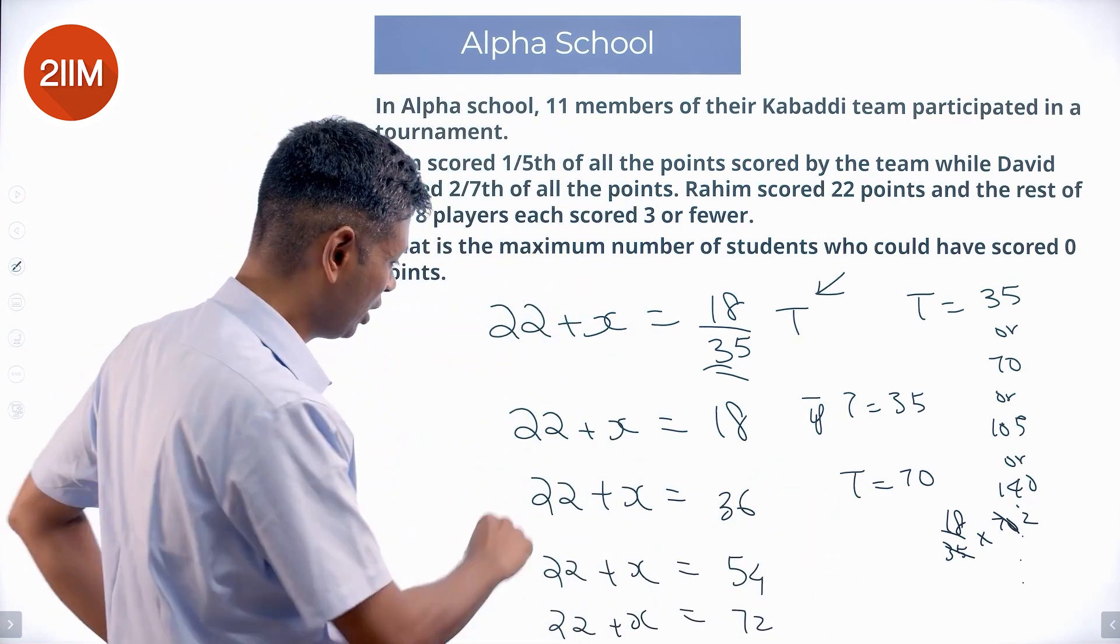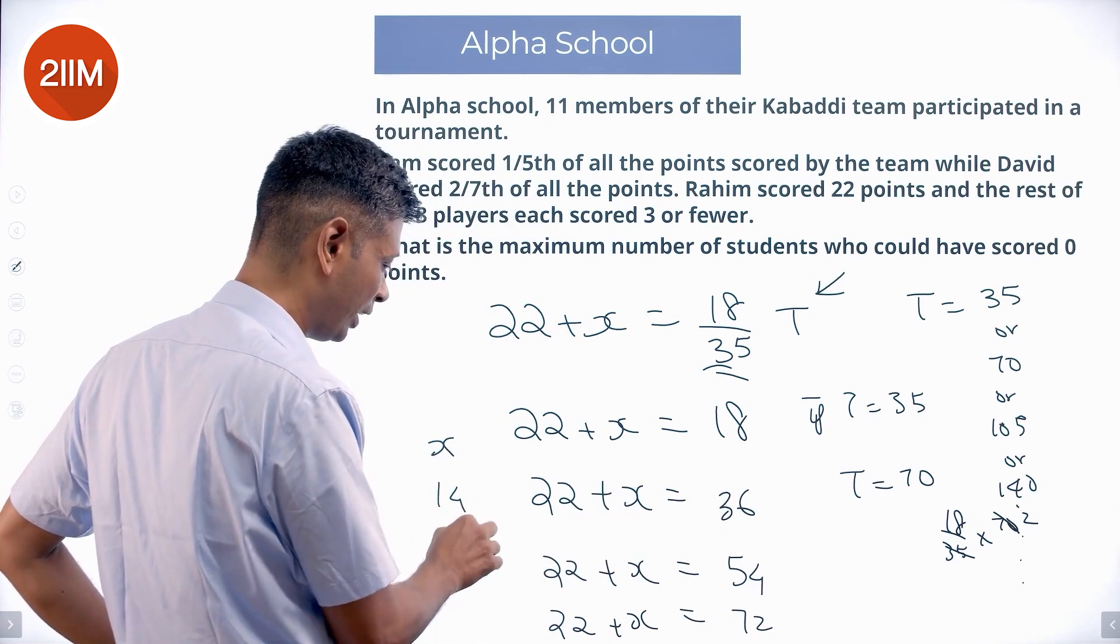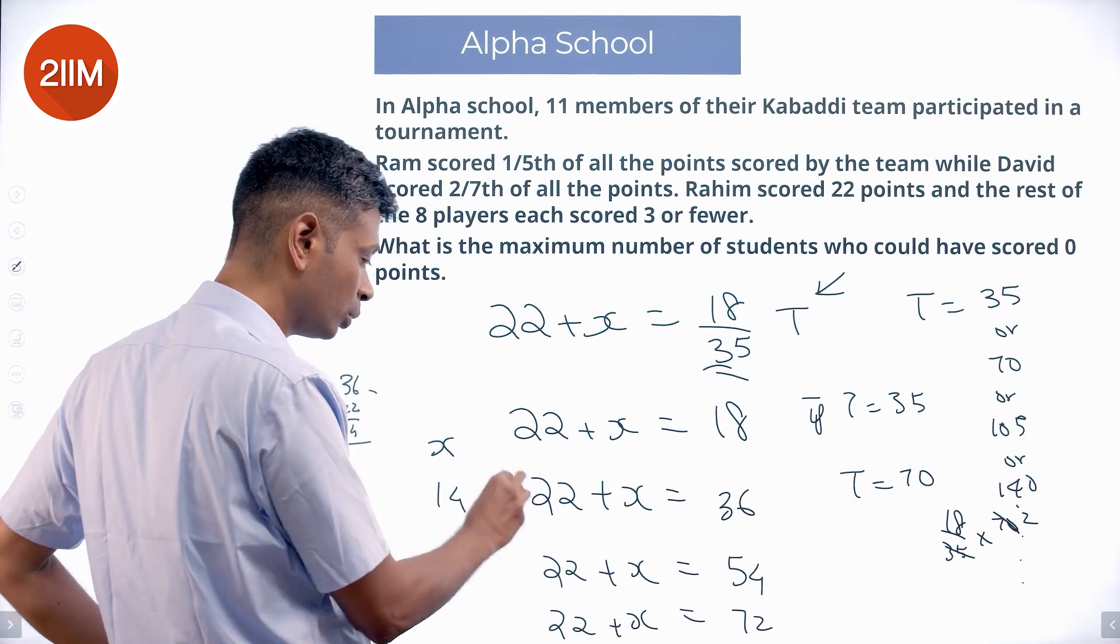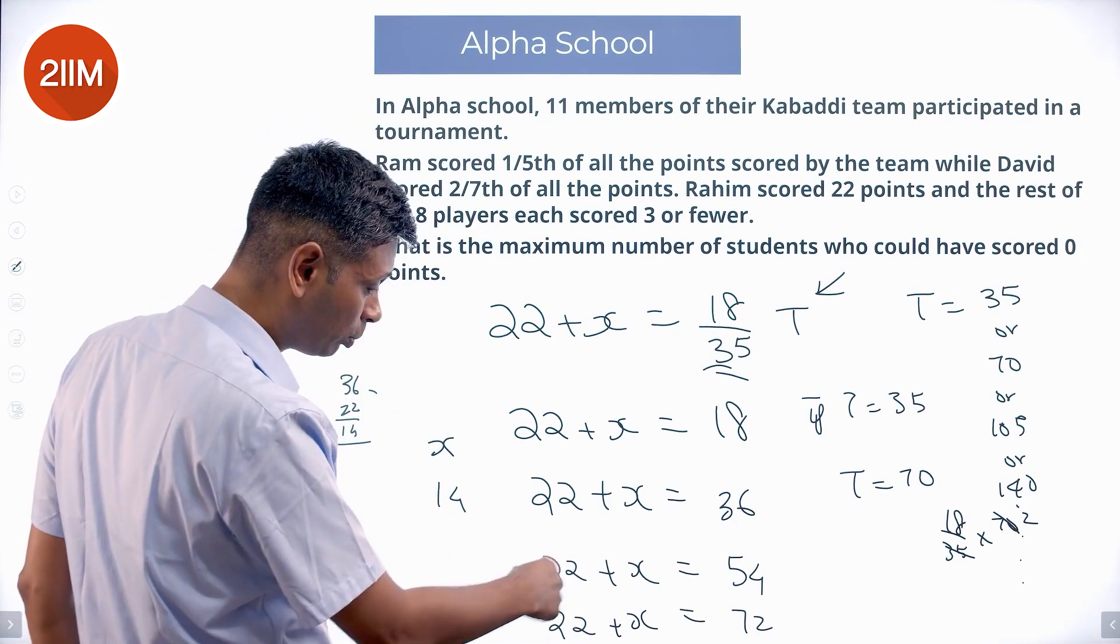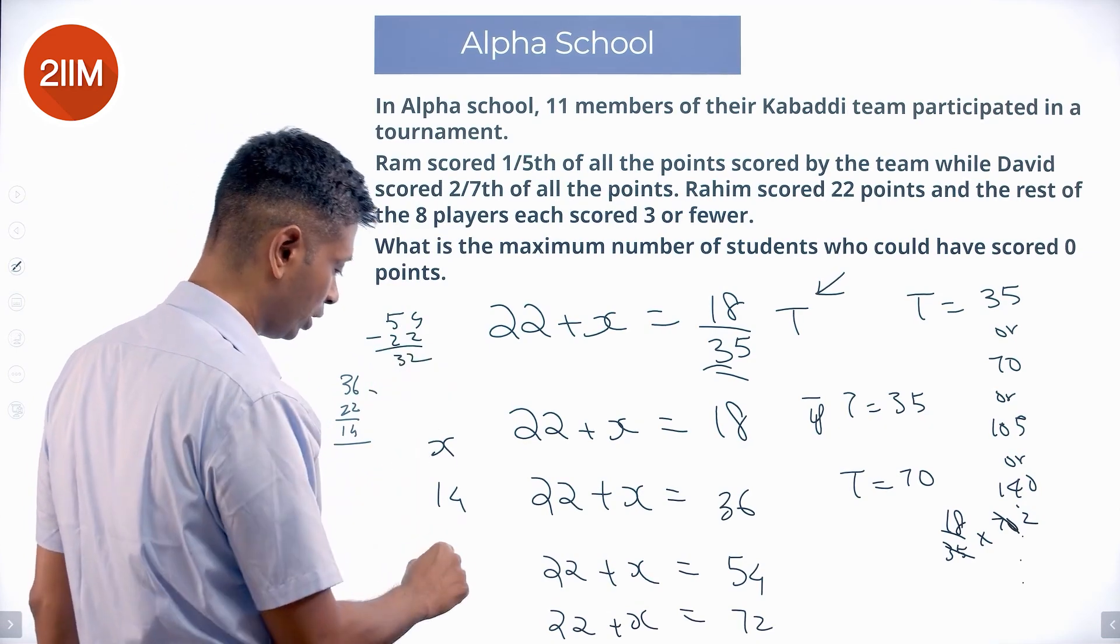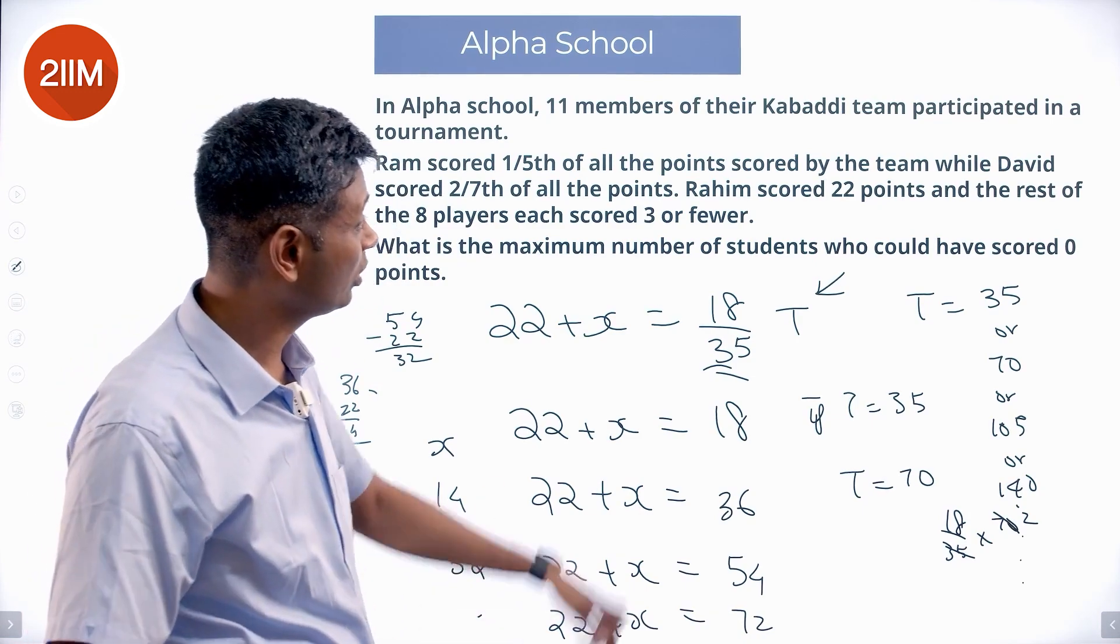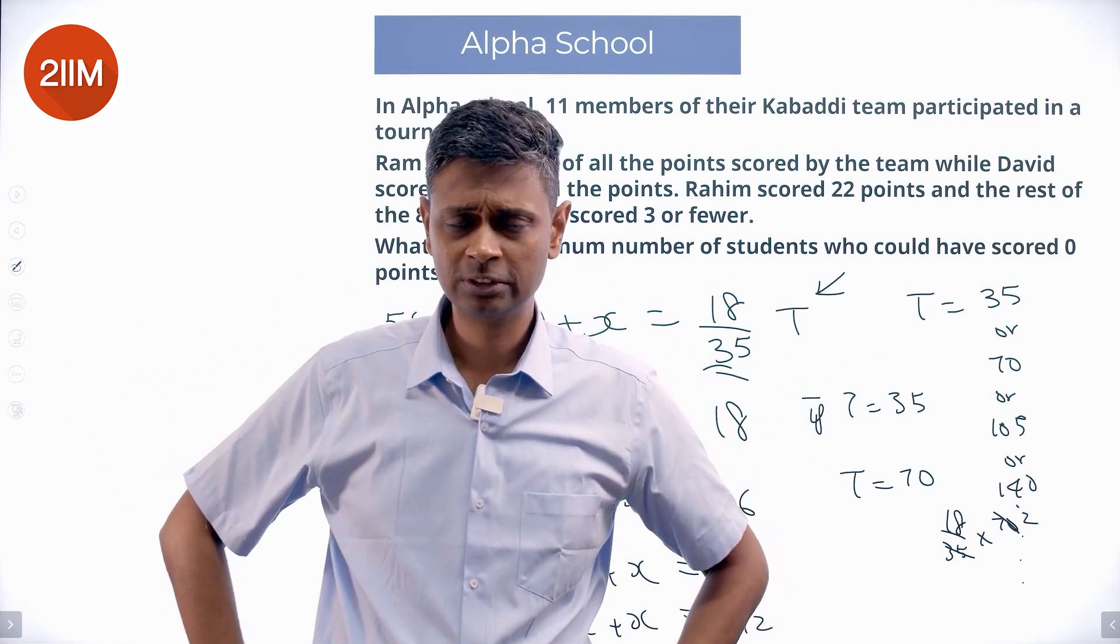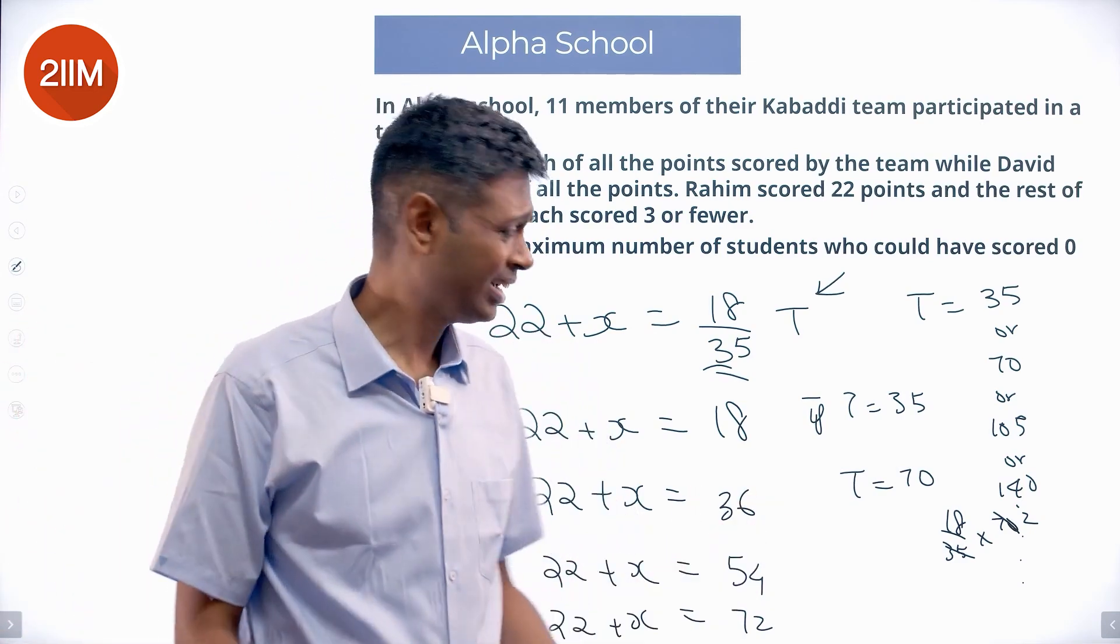It becomes the most interesting part. 22 added to this X is 36, or X has to be 14. How do I get 14? 36 minus 22. 22 and then X more takes us to 36. What will be this scenario? 22 plus X is 54, X is 54 minus 22 which is 32. We can find another number here and so on. This X is the total number of points got by 8 different people.